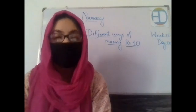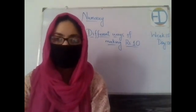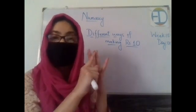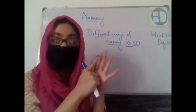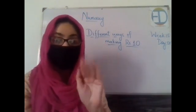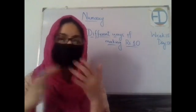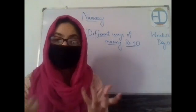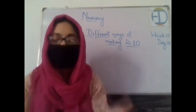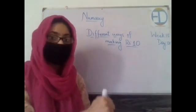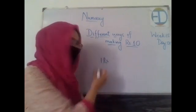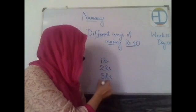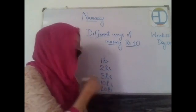Everybody is raising their hand — great, all of you know! Let's listen to Wasa. How many coins do we have? Five — good. Can you identify them? Coin of one rupee, coin of two rupees, coin of five rupees, coin of ten rupees, and coin of twenty rupees. So we have a total of five coins. We do not have a coin of three, four, or seven rupees, but we can make those amounts through combinations of others.